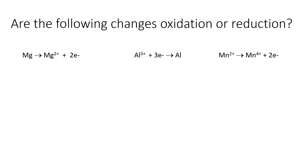Let's take a look at some examples. Magnesium going to Mg²⁺ plus two electrons — is that oxidation or reduction? Magnesium is losing electrons, so it's undergoing oxidation. How about Al³⁺ going to aluminum metal? That is a gain of electrons, so that is reduction.